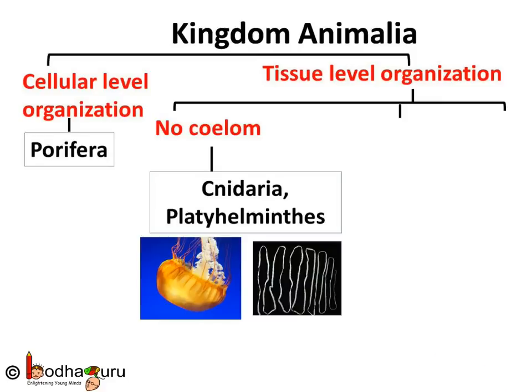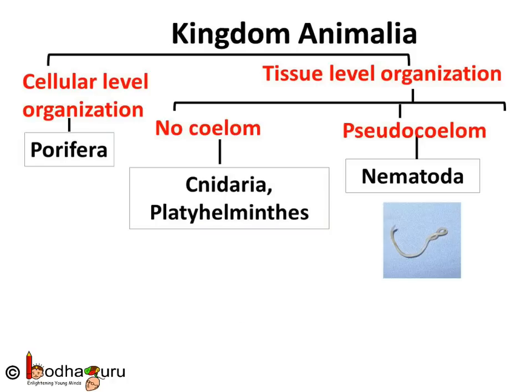Other than phylum Porifera, all the phyla show tissue level organization. Next we see if animals having tissues have a coelom or not. Few primitive animals have tissue level organization but they do not have a body cavity, i.e. they are acoelomate. Animals of Cnidaria, also known as Coelenterata phylum, and Platyhelminthes phylum have no such coelom. Nematodes like roundworms have a pseudocoelom but that is not the real coelom.